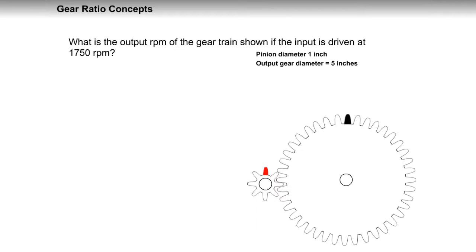What is the output RPM of the gear train shown if the input is driven at 1,750 RPM? To find a velocity of a gear, set up a basic linear equation and cross multiply and divide.